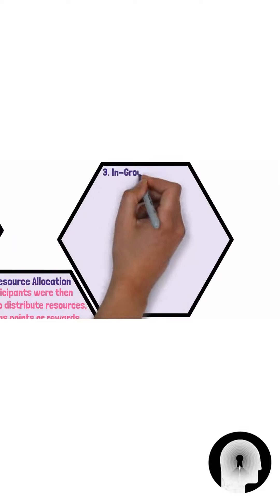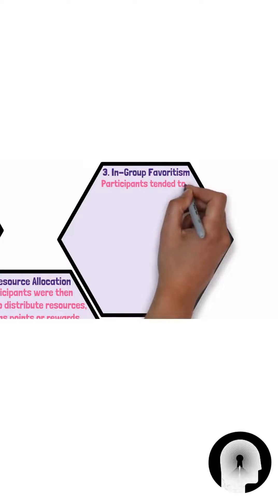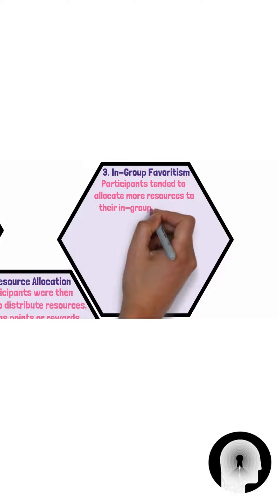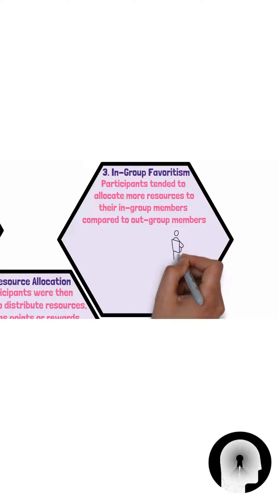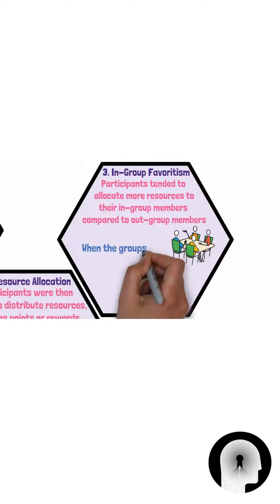Thirdly, in-group favoritism. The results consistently showed that participants tended to allocate more resources to their in-group members compared to out-group members. This in-group favoritism occurred even when the groups were formed arbitrarily and had no real significance.